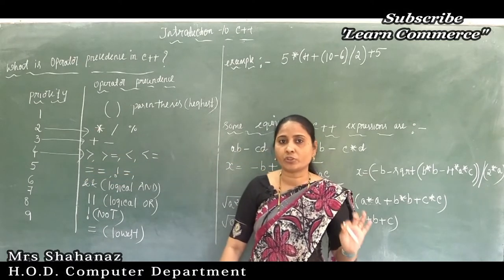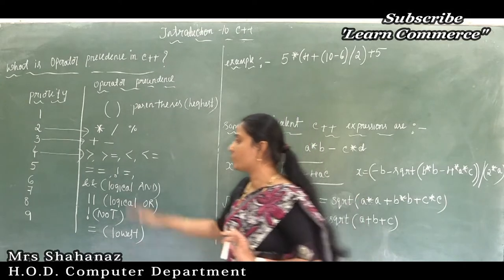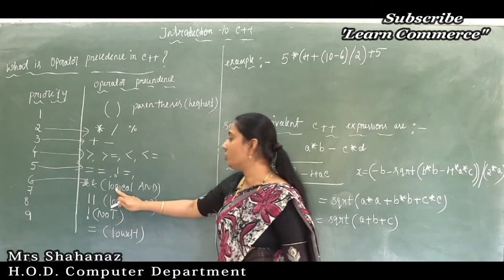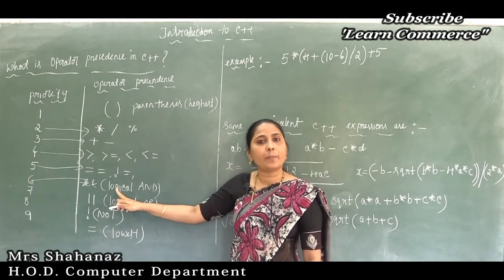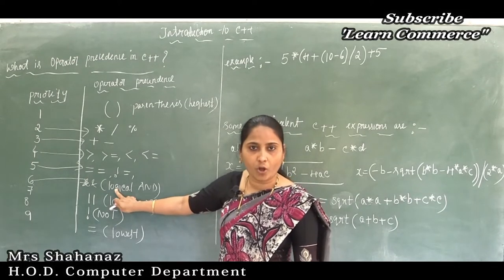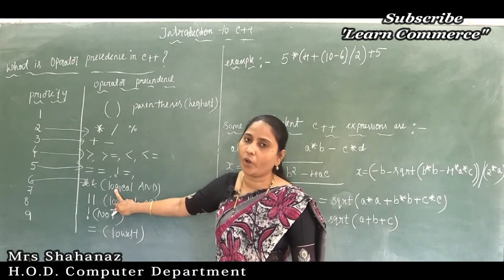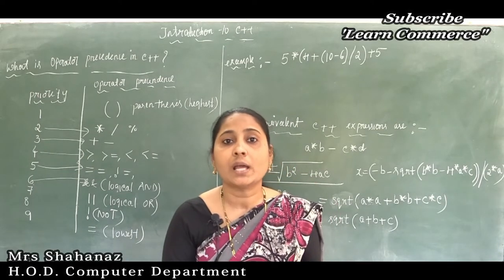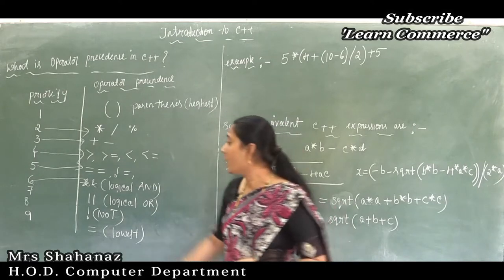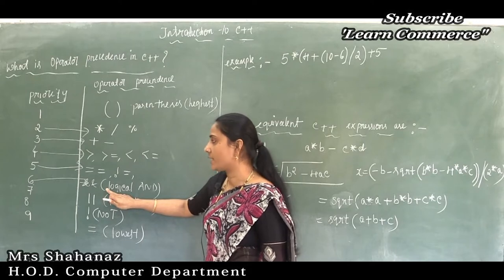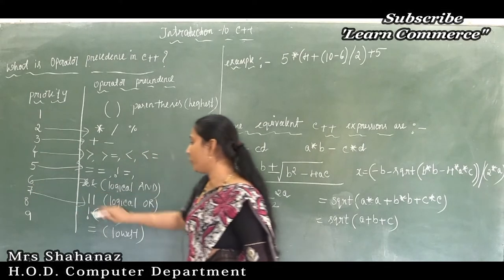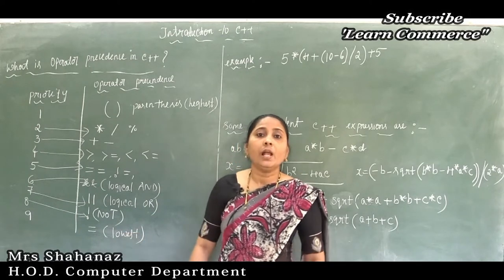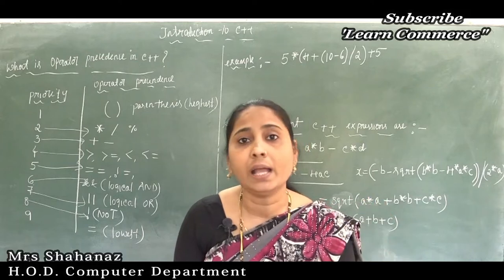After the relational operators, the sixth priority is given to the logical AND operator, written with a double ampersand sign. The seventh priority goes to logical OR, followed by logical NOT. Finally, the last priority is given to the assignment operator, the equal sign.